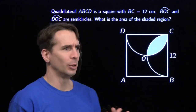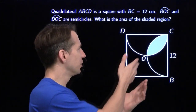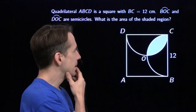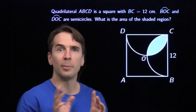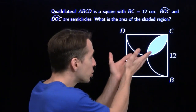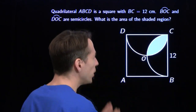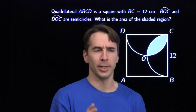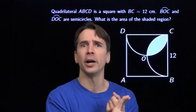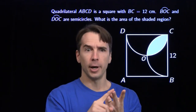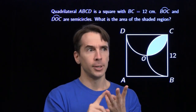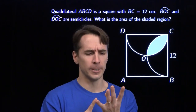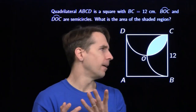Unfortunately, I don't know any formulas for dealing with the weird leaf, so I'll break out my key strategy for problems like this. I'm going to try to express this weird region in terms of things I know how to handle. What do I know how to handle? Squares. Triangles. Circles. Pieces of circles. Sectors.